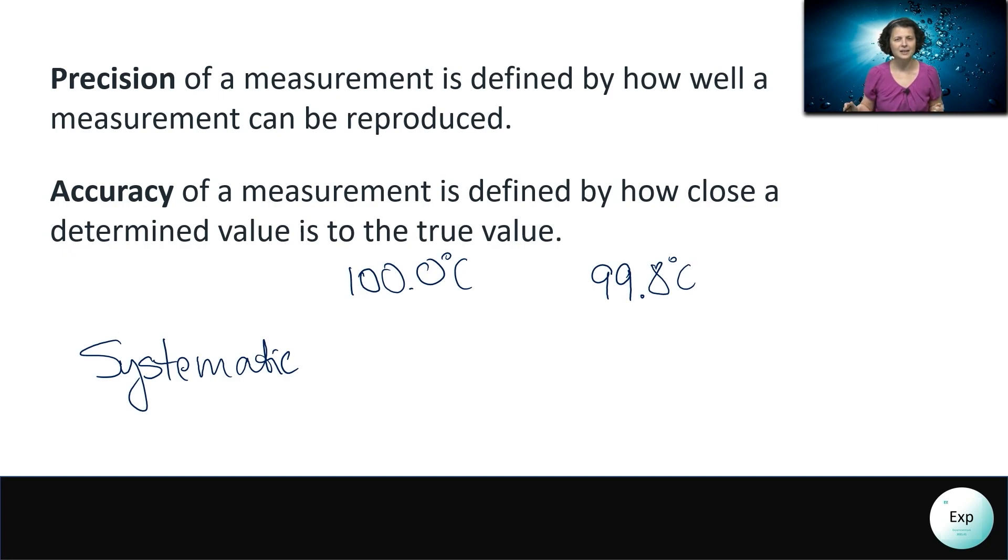The solution to a systematic error is usually calibration of an instrument. If there is something wrong with an instrument, it always throws off the numbers by the same amount in the same direction. So if it's always under by the same amount or always over the desired amount by the same value, then it is a good idea to look at calibrating the instrument.